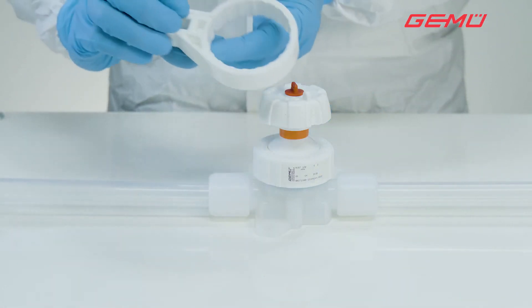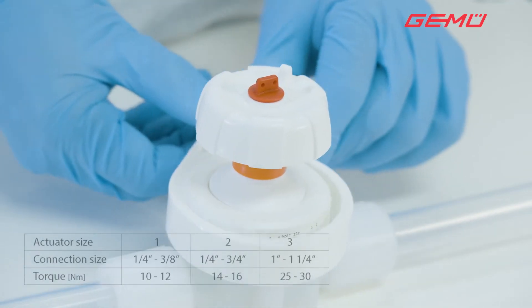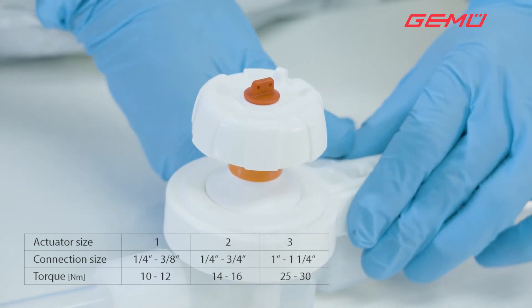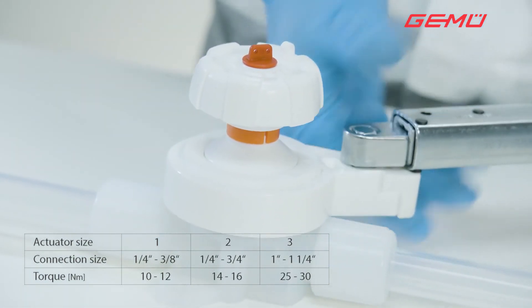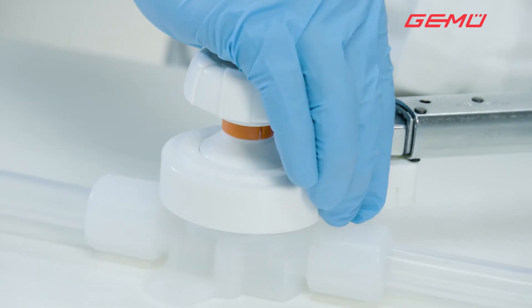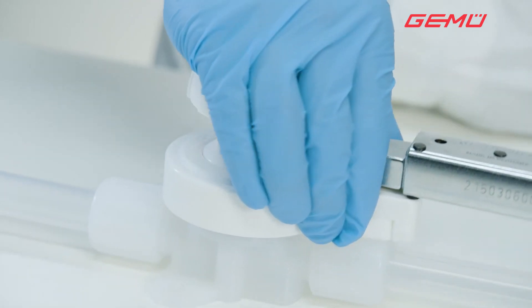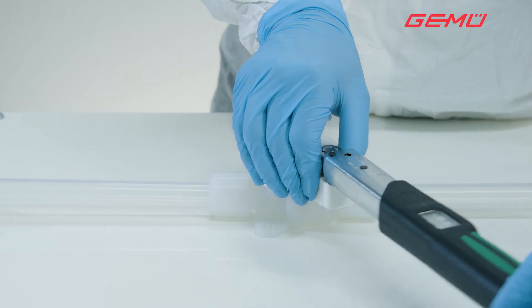Position the GEMU Service tool in the correct position on the central nut and attach the torque wrench in the extension for the service tool handle. Failure to do so will result in an incorrect torque. Tighten the central nut to the specified torque.